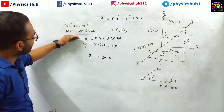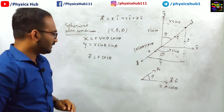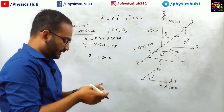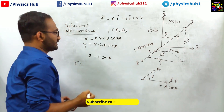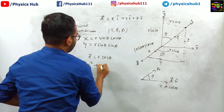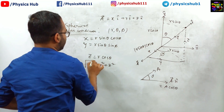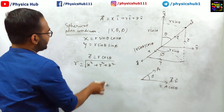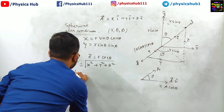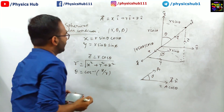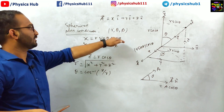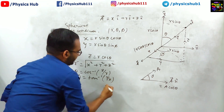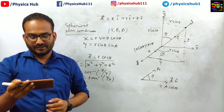In this way, the Cartesian coordinates and the spherical polar coordinates are interlinked. Now, what about the magnitude? If you take root of x-squared plus y-squared plus z-squared, what you get is R. So R-squared equals x-squared plus y-squared plus z-squared, and R is the square root of these. For theta: since z equals R cos theta, theta equals cos-inverse of z over R. For phi, taking the ratio sin phi over cos phi gives tan phi equals y over x, so phi equals tan-inverse of y over x. In this way we establish the relationship between the Cartesian and spherical polar coordinates.